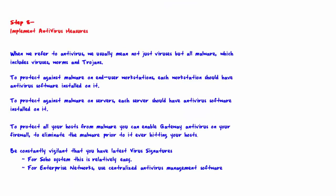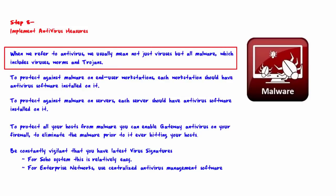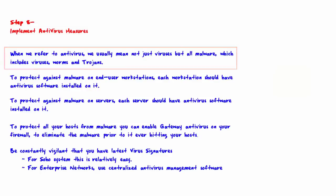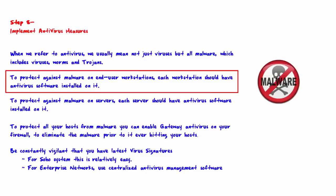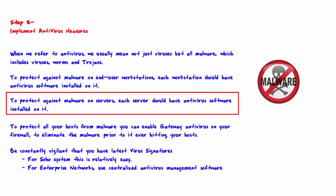Welcome to step eight: implement antivirus measures. When we refer to antivirus, we usually mean not just viruses but all malware, which includes viruses, worms, and trojans. To protect against malware on end-user workstations, each workstation should have antivirus software installed. To protect servers, each server should have antivirus software installed — the server antivirus may be specific to that type of server and is generally different from what's installed on workstations.